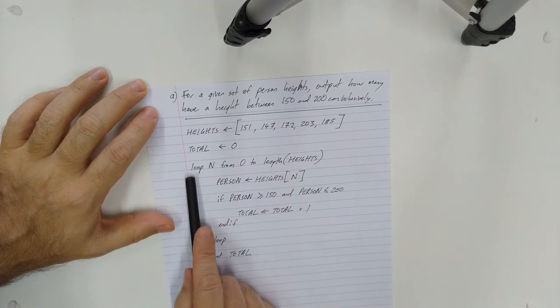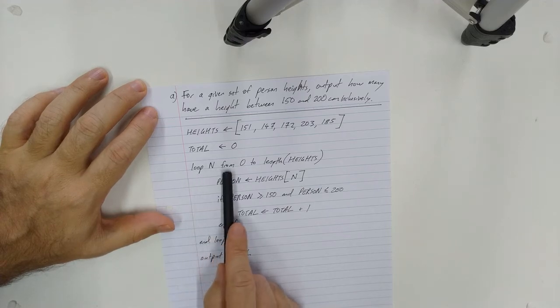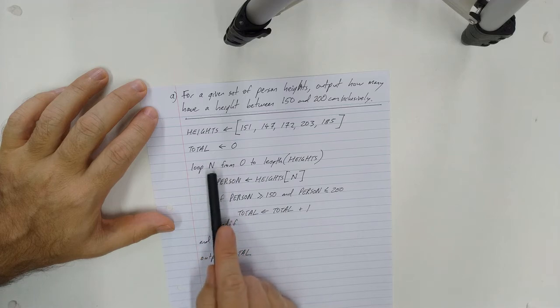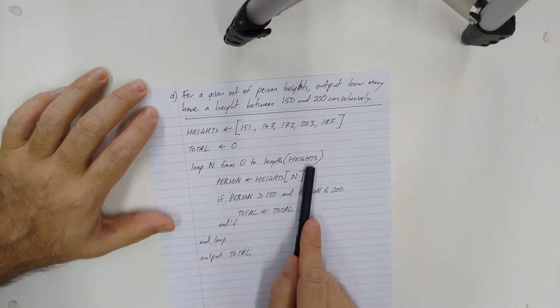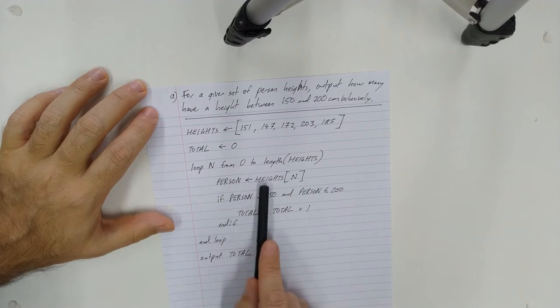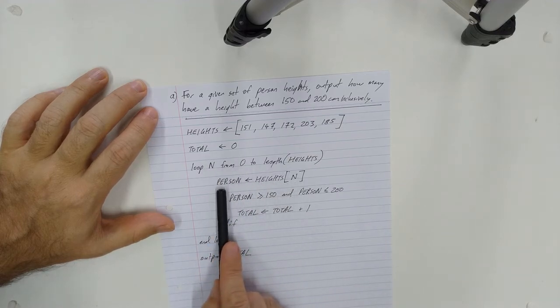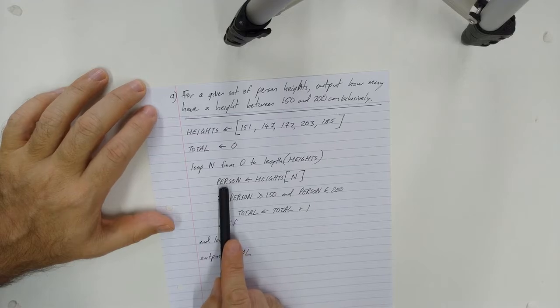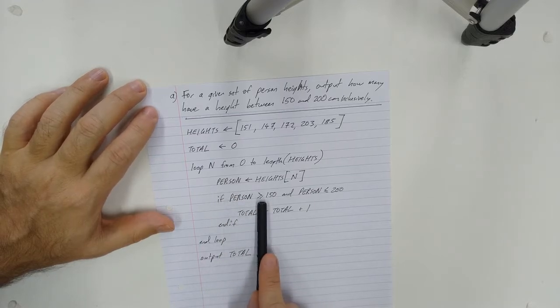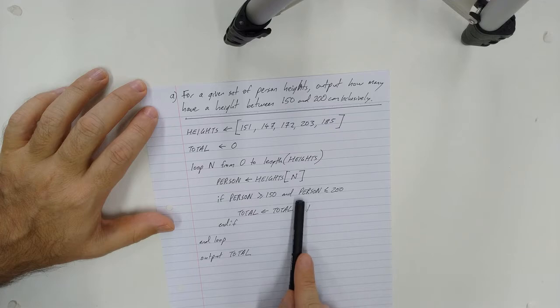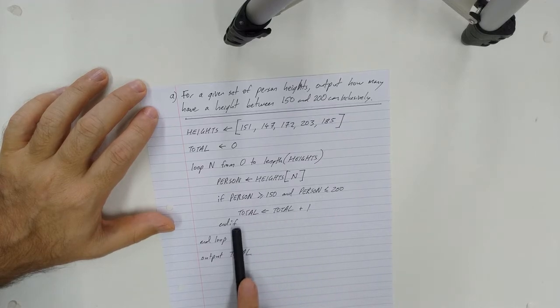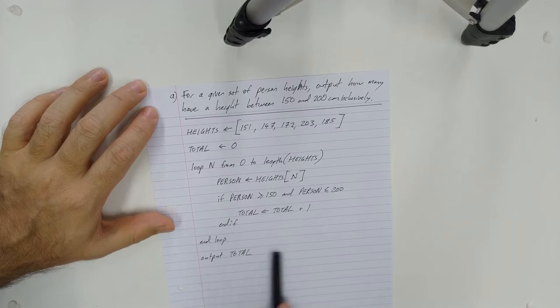So loop using the n variable from zero to the length of the heights array. Then we look up the array, take the nth person, put their height into this person value and then if the person is greater than or equal to 150 and it's less than or equal to 200, increase the total by one, end the if, end the loop and output the total.